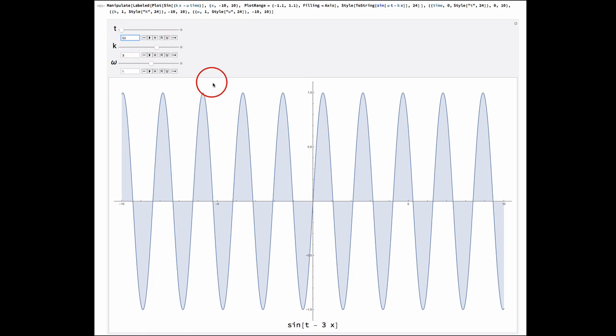Well, we see the wavelength shortening. So the wavelength is inversely proportional to k. Lambda is 2 pi divided by k. So k goes up, wavelength goes down.